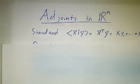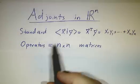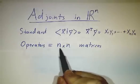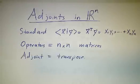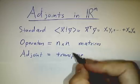Okay, but how do you get them? Well, adjoints are actually very easy if we're working with Rⁿ with a standard inner product. See, if you're working with Rⁿ, then of course operators are nothing but n by n matrices. And I claim that the adjoint of an operator is just its transpose.